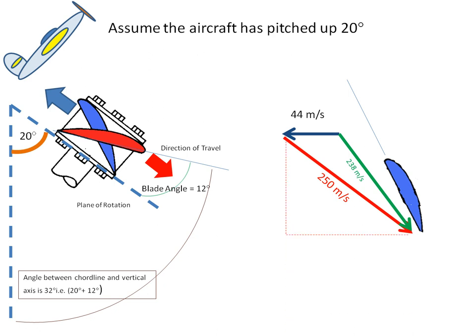And that can be explained, because this vector here can be broken down into its horizontal and vertical components. And this has a horizontal component of 85 meters per second. But the airspeed vector is 44 meters per second in this direction. So the difference between 44 and 85 is 41 meters per second. So it's this difference that's causing the reduction in the relative airflow over the blade.